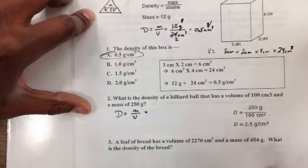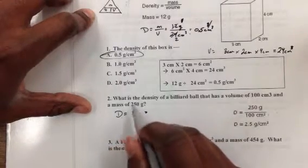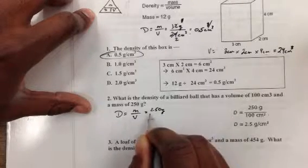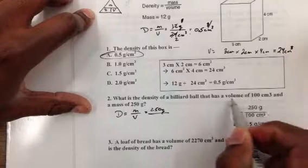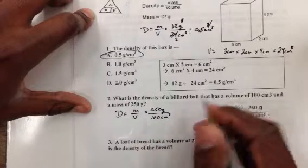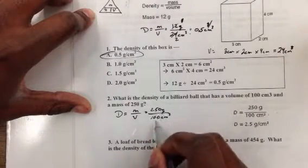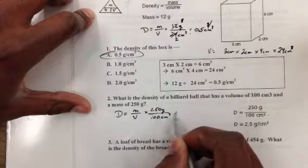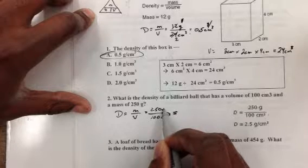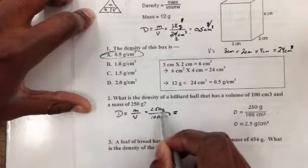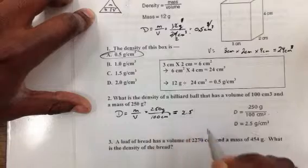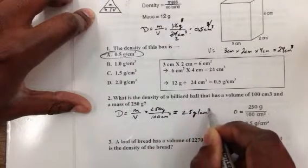This one's already done for you right here, but again, I'm just walking you through it. We can see that our mass, which we measure in grams, is 250 grams. And when you divide that by the volume, which is here, it says a volume of 100 centimeters cubed, that's 100 centimeters cubed. 250 divided by 100, you do the math.